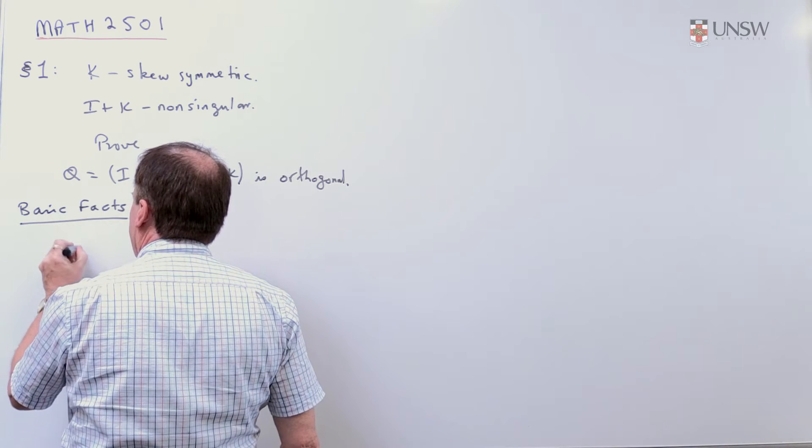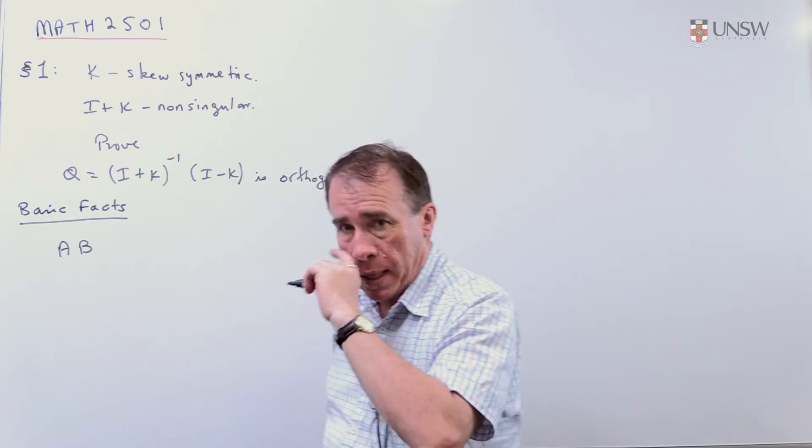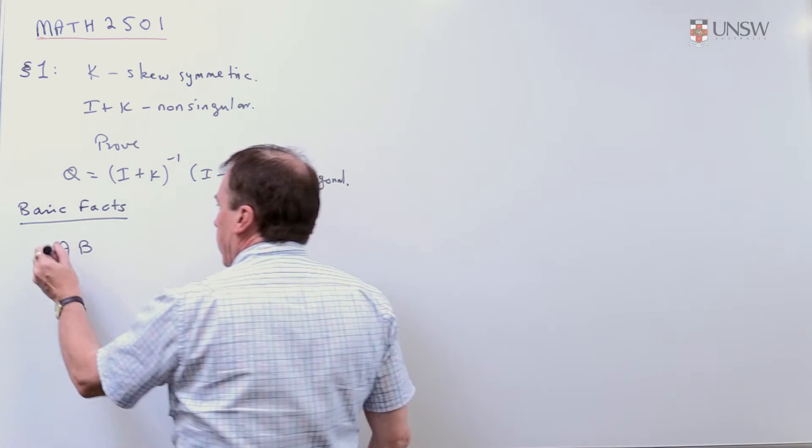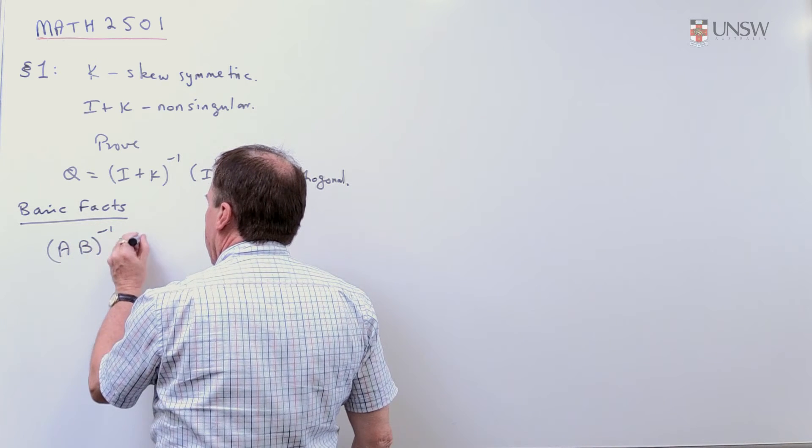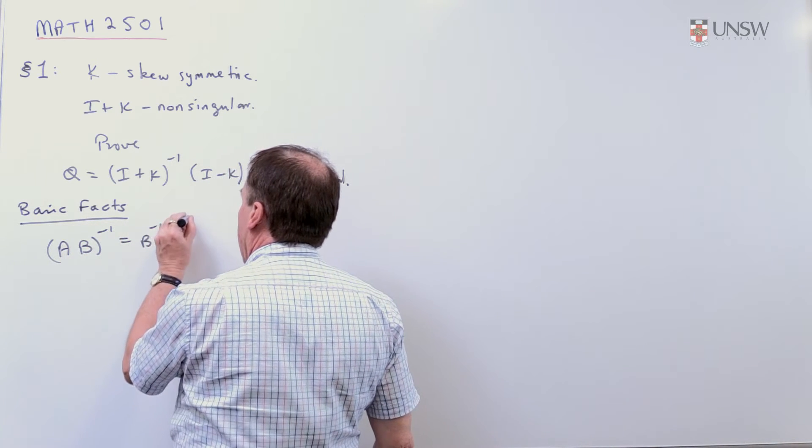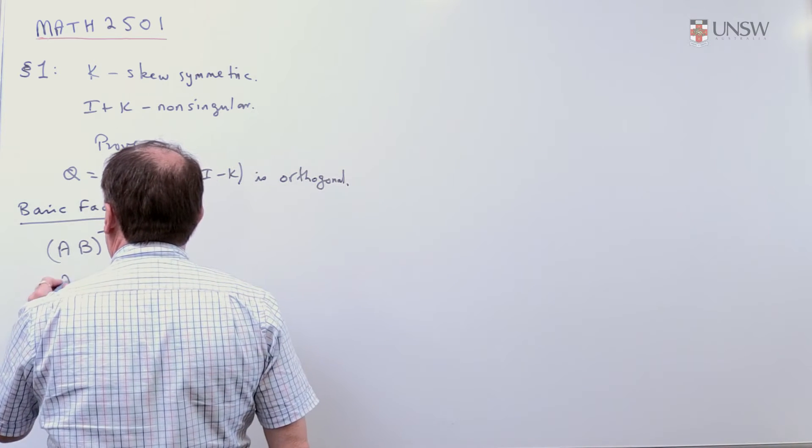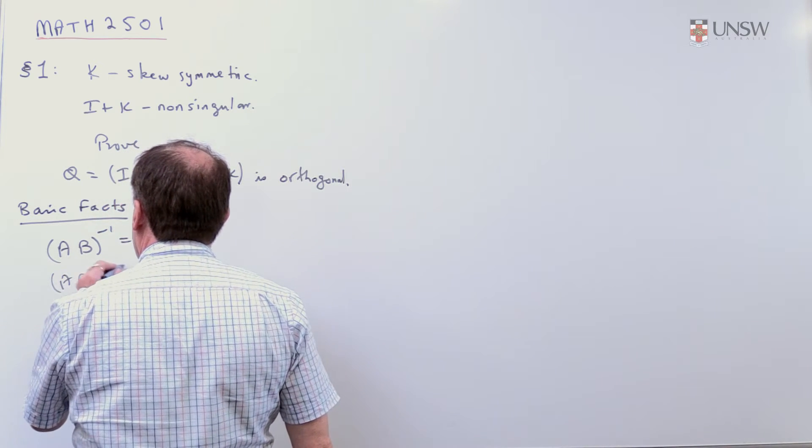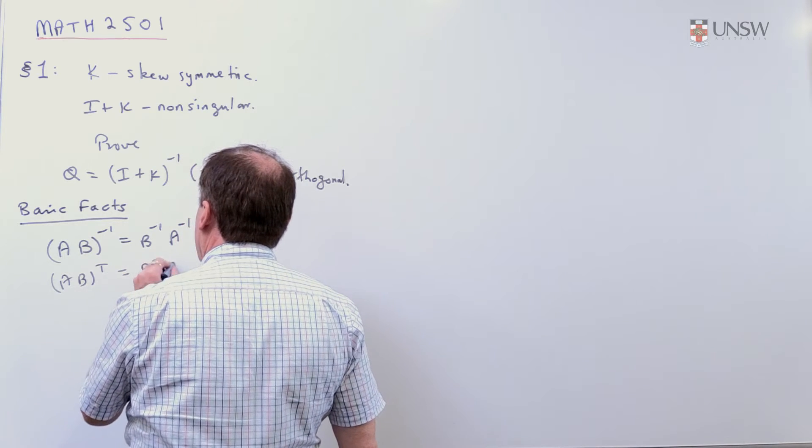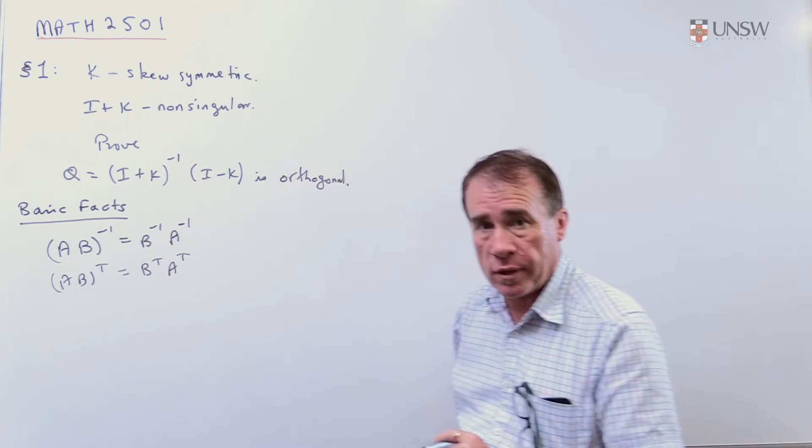Basic fact is that if you've got A and B square matrices that are invertible, and you take the inverse, then that's the same as B inverse, A inverse. That's very important. And also, if you've got AB transpose, that's B transpose, A transpose, so that's very important.